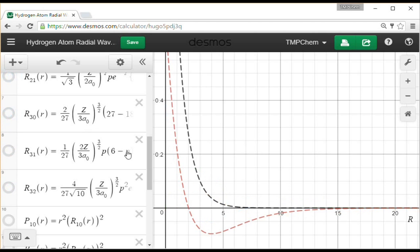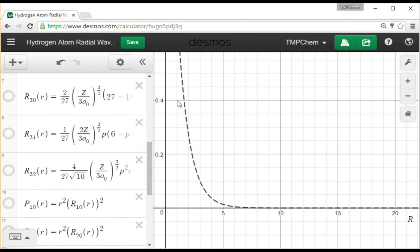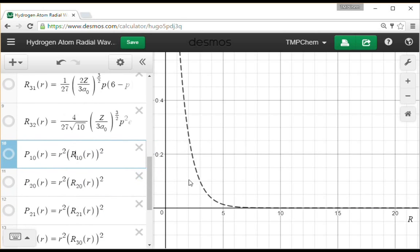So when we do that, if I start looking just at the 1s for demonstration, we have this function, we're going to square it, and we're going to multiply it times a parabola, R squared. So it's going to start at 0, go up, reach a maximum, and then the decay will take over and it will go down.